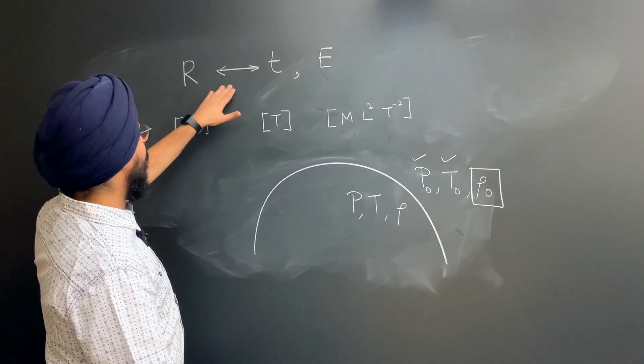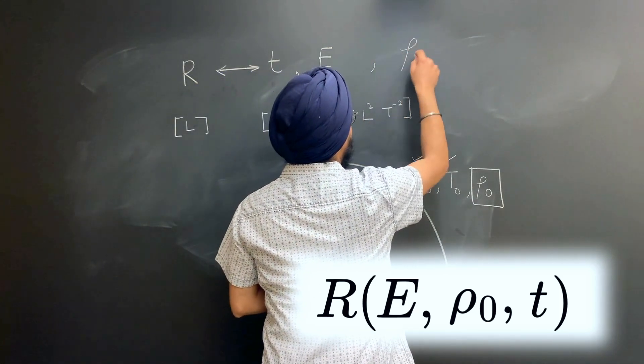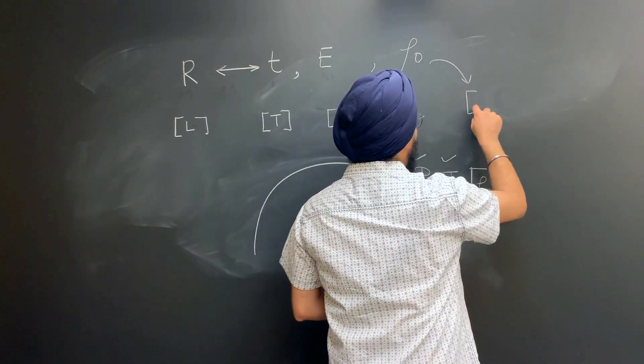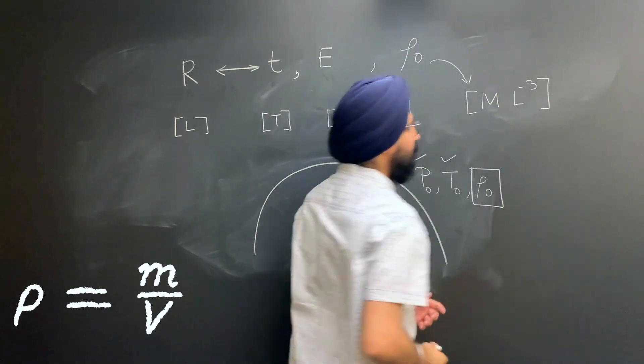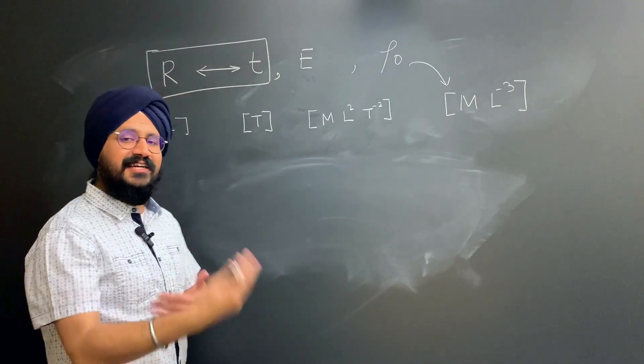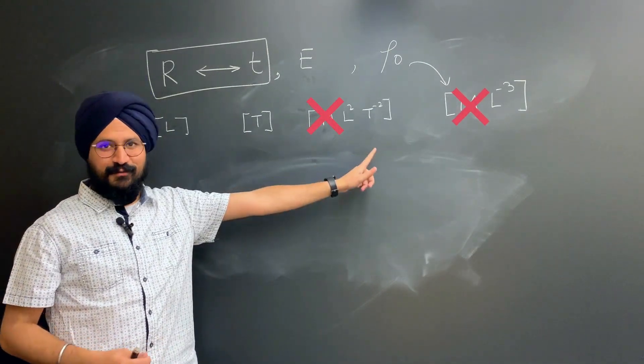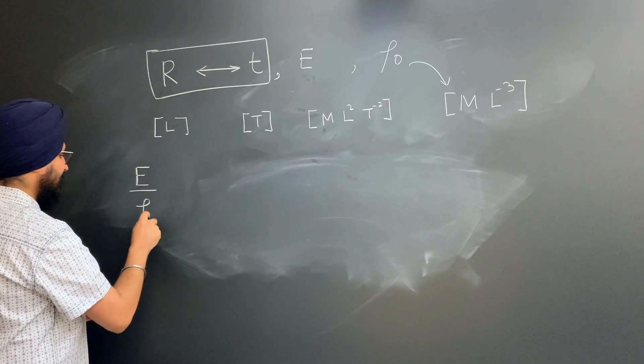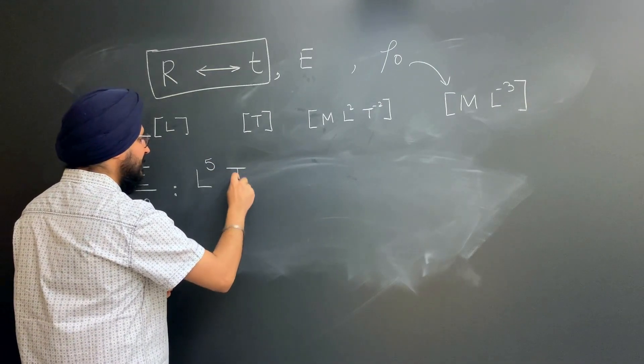Thereby, we want to find our connection of the radius with the time elapsed, the energy released, and also the density of undisturbed air outside. This density has dimensions of mass per volume, so mass times l to the minus 3. We are primarily seeking a relationship between the radius of the blast wave and the time elapsed after the explosion. So we basically want to eliminate the dimension of mass from all our quantities. Notice how the ratio energy of the blast divided by the density of the undisturbed air has dimensions of l to the fifth t to the minus 2.